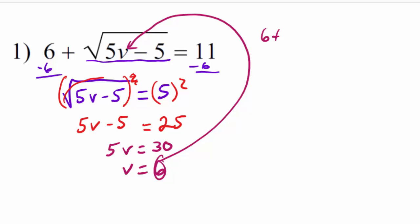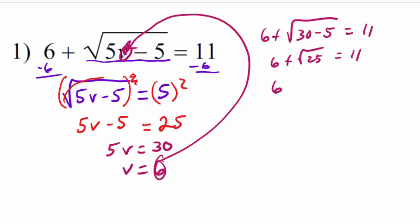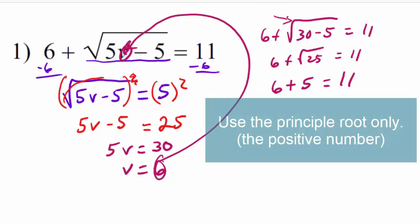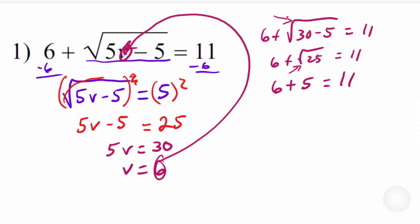So we end up with 6 plus the square root of — putting 6 in, 6 times 5 gives 30 minus 5 equals 11. So I have 6 plus the square root of 25 equals 11. The square root of 25 is 5. Remember, when we do square root equations we always take the principal root — the positive root. So 6 plus 5 is 11 equals 11. That checks out. Therefore, 6 is a solution.